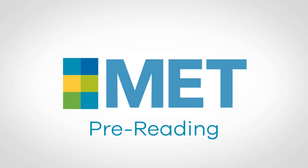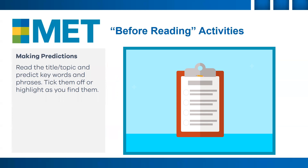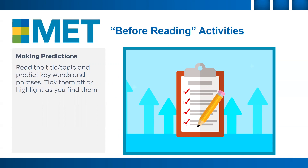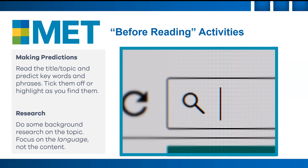Pre-reading: Predictions — read the title or topic of a text and predict key words or phrases that you think will appear, then tick them off or highlight as you read. Research — do some background research on the topic so you can focus on the language and not the content.